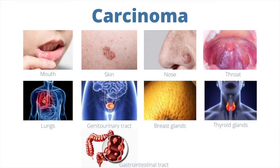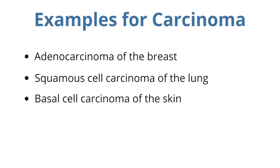Carcinomas can occur in several places of the body such as skin, mouth, nose, throat, lungs, genitourinary and gastrointestinal tracts, and glands such as breast or thyroid. Examples include adenocarcinoma of the breast, squamous cell carcinoma of the lung, and basal cell carcinoma of the skin. Some cancer scientists have also thought that the name was given because the tumor grabs surrounding tissue like the claws of a crab, making such tumors hard to remove.